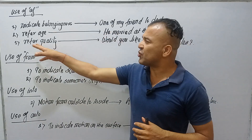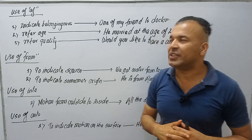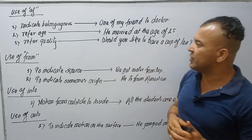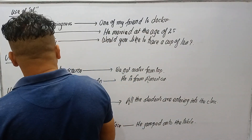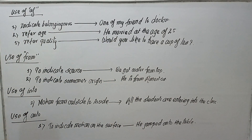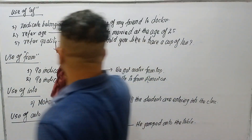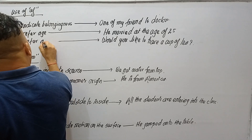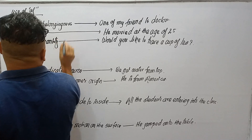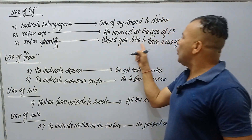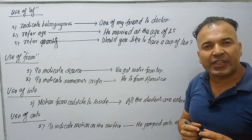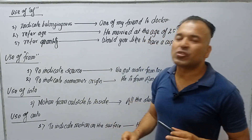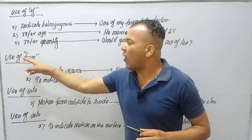The third use of OF is to refer to quantity. For example: 'Would you like to have a cup of tea?' Here, 'cup of tea' refers to the quantity — how much — not quality. So OF is used to indicate quantity.